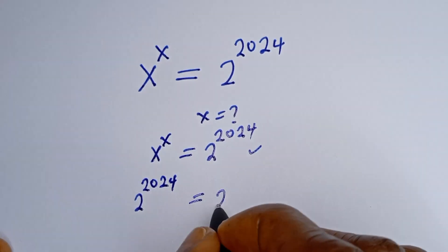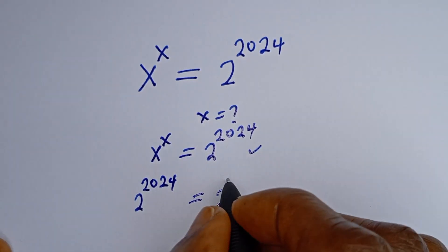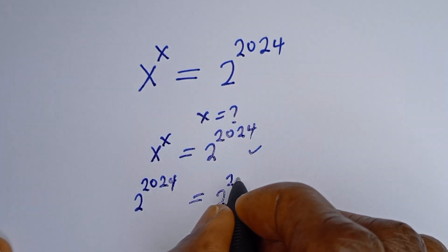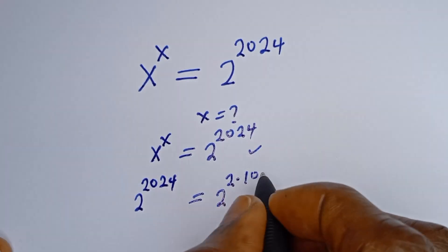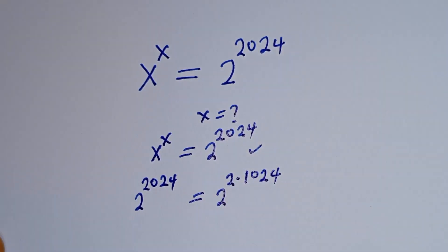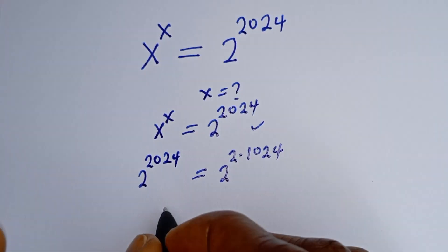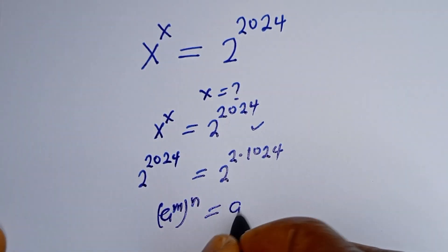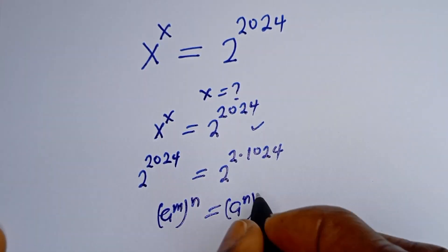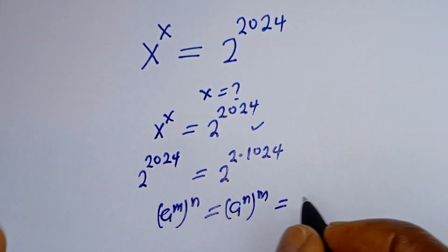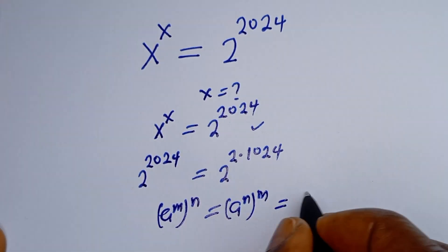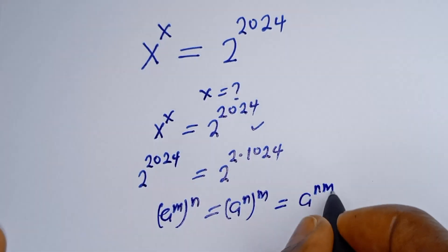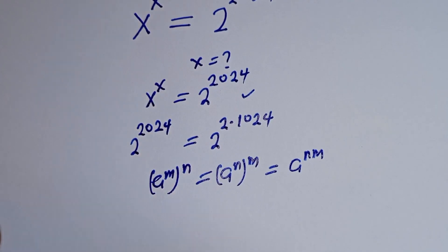2 to the power of 2024 is equal to 2 to the power of 2 multiplied by 1024. Take note of this explanation: if you have l to the power of m, to the power of n, this is equal to l to the power of n to the power of m, which is equal to l to the power of m times n.